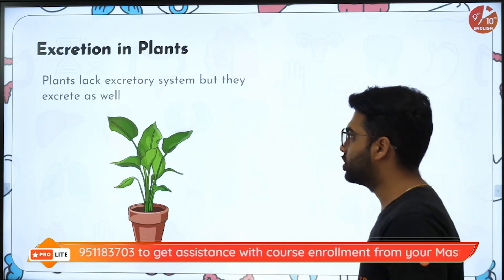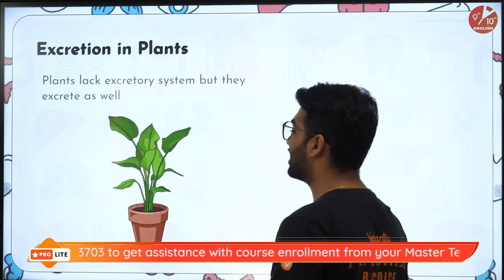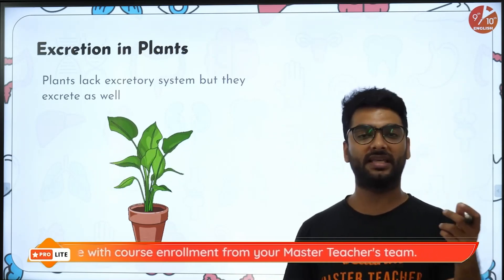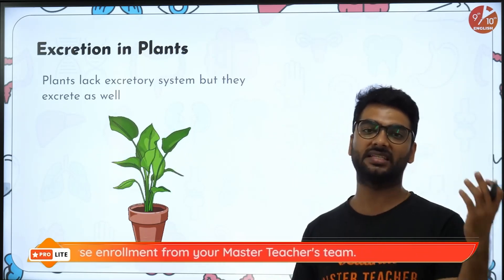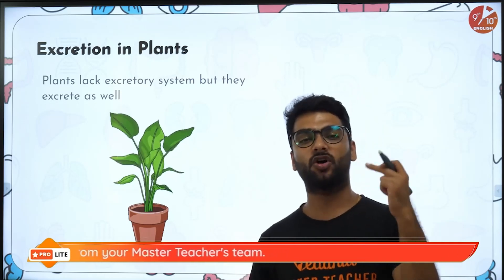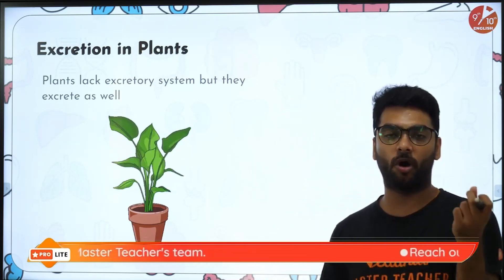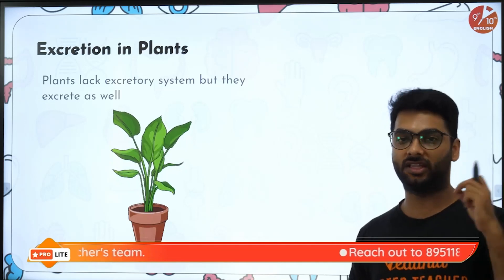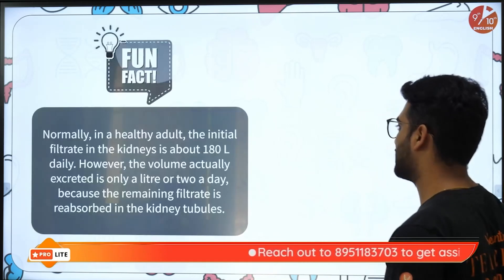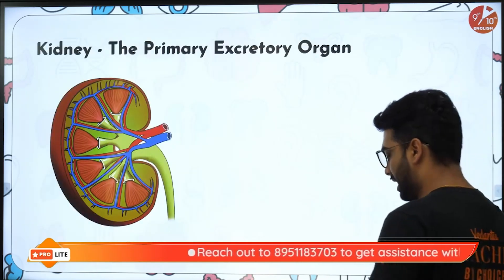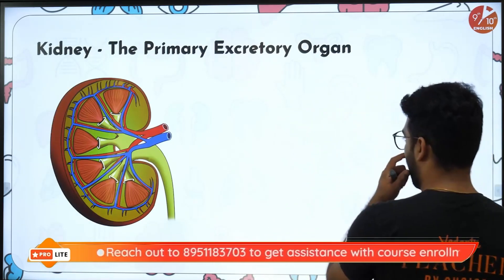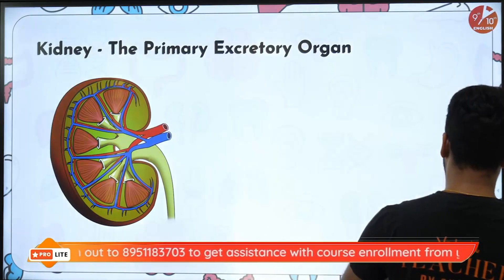When talking about excretion in plants, plants lack an excretory system but they do excrete as well. For example, shedding of leaves is a type of excretion. Plants also give out water in the form of droplets through the hydathodes. Before discussing plant excretion further, let me explain the process of urine formation and certain notes about nephrons.